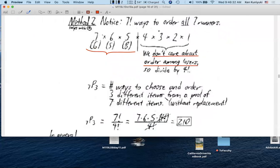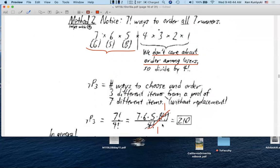When you do this, and you do these cancellations here, you end up with 210. Seven factorial is seven times six times five times the rest of this is four factorial that cancels out with the bottom.